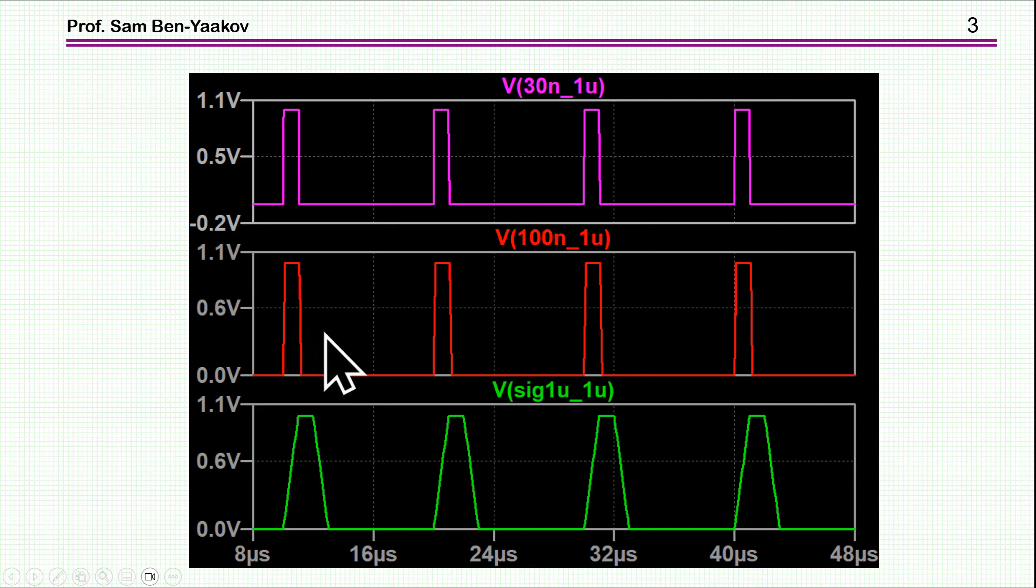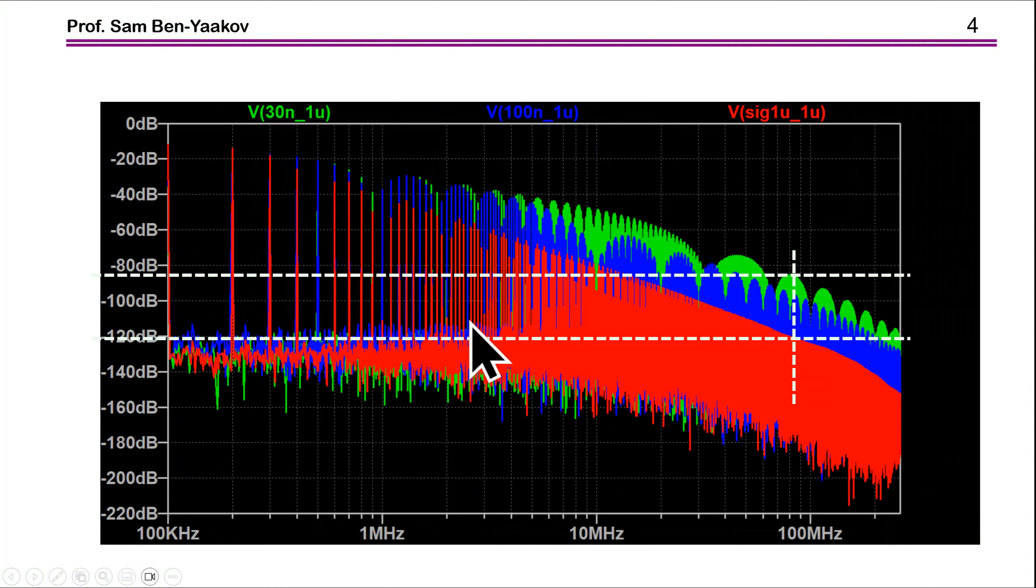So here I'm showing some pulses, the top is one microsecond in all of these but the slopes are different. The rise time here we have a rise time of one microsecond, this is a hundred nanoseconds and this is 30 nanoseconds. So now let's have a look at the spectrum and here it is, these are the three cases and as you can see there is quite a bit of a difference at high frequency as it would be expected.